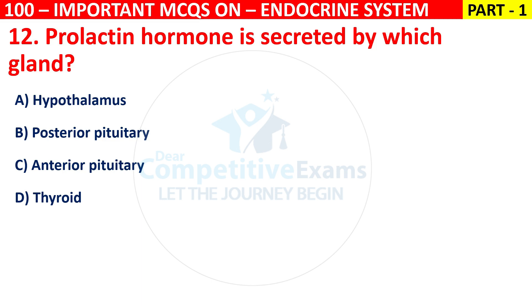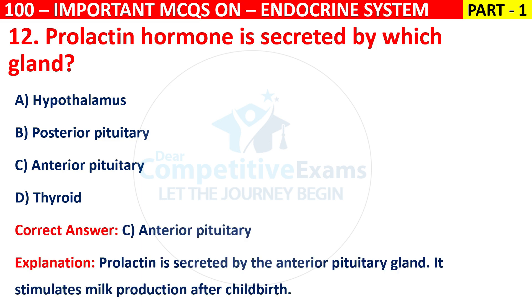The correct answer is C, that is anterior pituitary. Prolactin is secreted by the anterior pituitary gland. It stimulates milk production after childbirth.